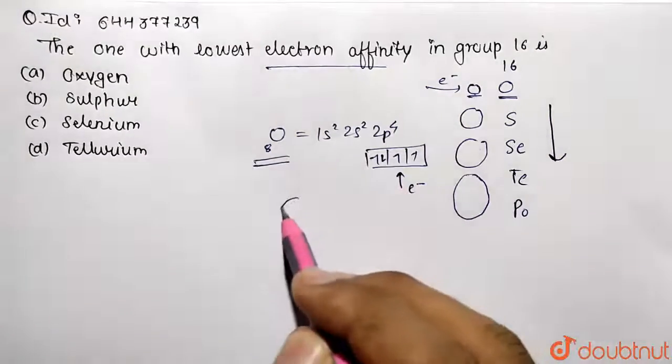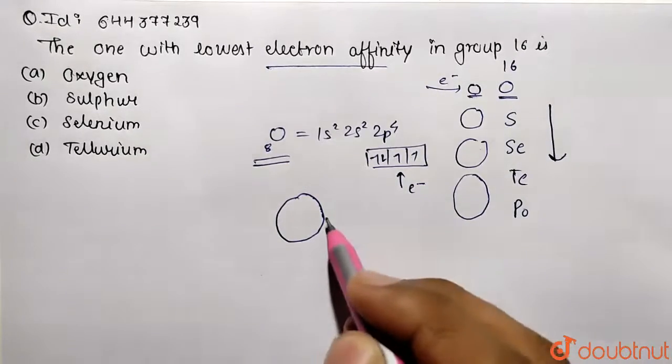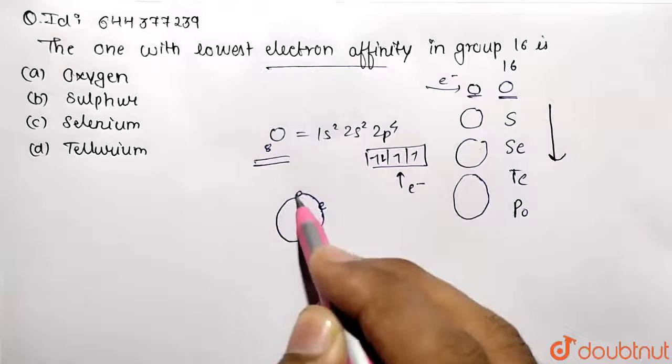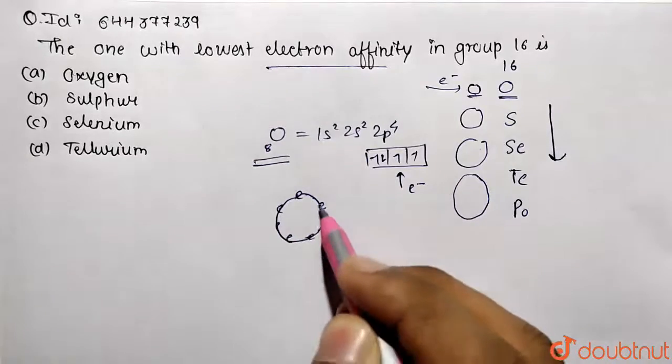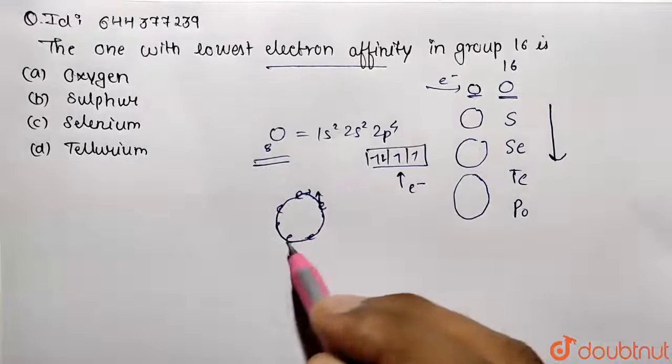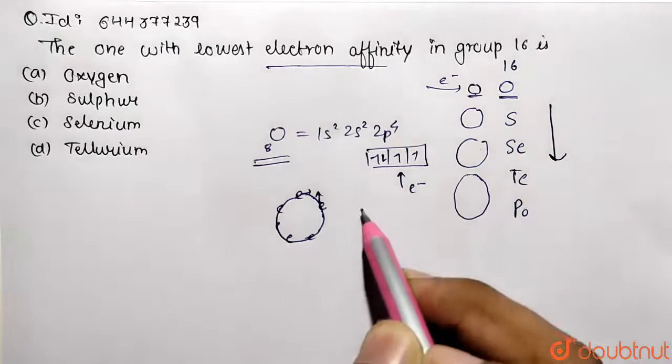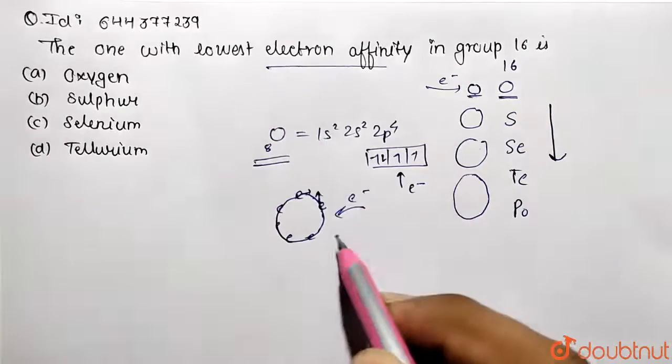Due to this small size of oxygen, when electrons are being added, they are going to cause internal repulsion. So they are being repelled because of negative-negative nature. So this is going to be a kind of unstable situation, and here not much energy will be released on the addition of an electron to oxygen. So this was the reason.